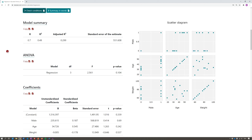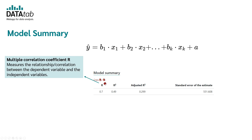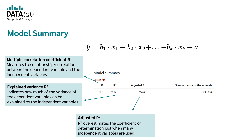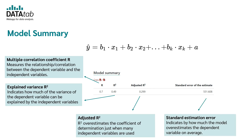Now let's have a detailed look at the results. In the model summary, you find the multiple correlation coefficient R, which measures the relationship between the dependent variable and the independent variables. To find out how much of the variance of the dependent variable is explained, look at R-square, or the explained variance. Another important indicator is the adjusted R-square, which is important because R-square overestimates the coefficient of determination when many independent variables are used. Finally, it's important to look at the standard estimation error, which indicates by how much the model overestimates the dependent variable on average.